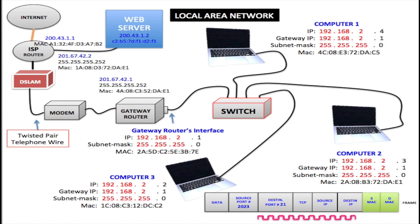Now I'm going to use computer one again, but this time the user of computer one is going to be trying to get onto the internet. He's going to put the internet address 200.43.1.2 into the browser. As soon as he does that, the computer is going to realize that he's trying to get off the network, so the computer is going to route the traffic to the gateway IP. A frame is going to be sent from this network interface card right to the network interface card for the gateway. This frame is going to have the destination MAC address for this gateway, the source MAC for this computer, the destination IP address which is the IP address for this web server, and the source IP which is the IP for this computer — the 2.4 IP.